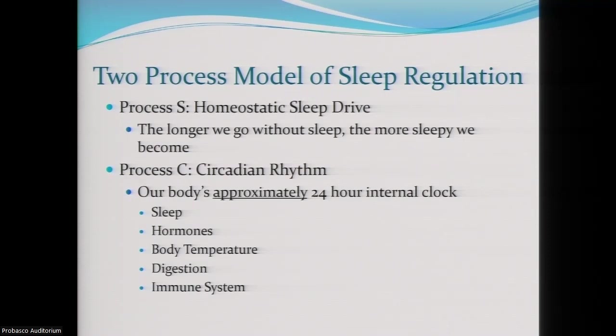For Process C, that's the circadian rhythm — our body's approximately 24-hour internal clock. It says 'approximately' because not everybody is the same, and it's just a little bit longer than 24 hours — time is a human construct. Everybody's internal clock is a little bit different, somewhere around 24.2 hours. This regulates things like sleep, hormones, body temperature, digestion, and immune system.